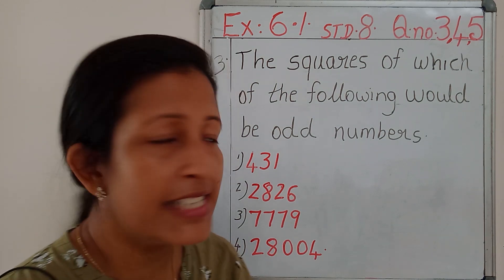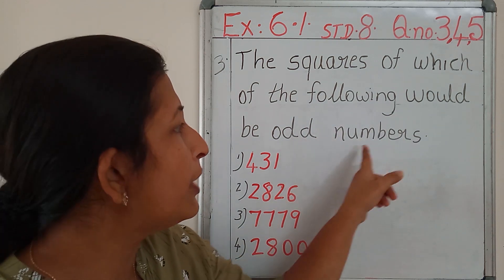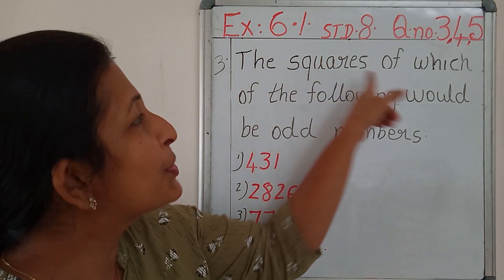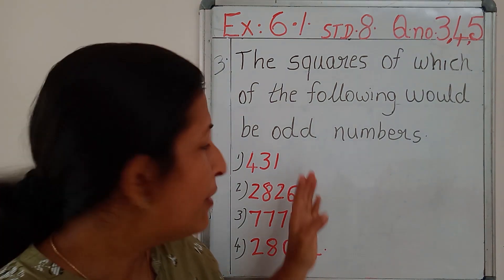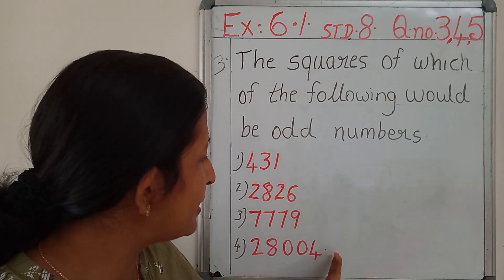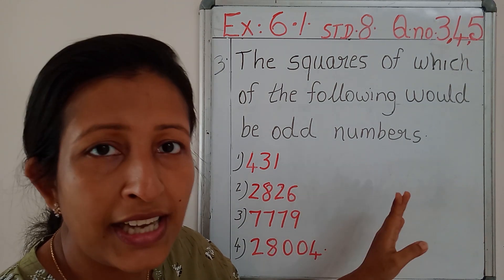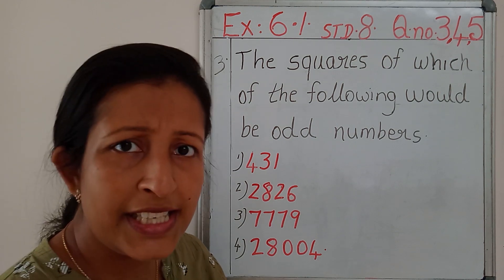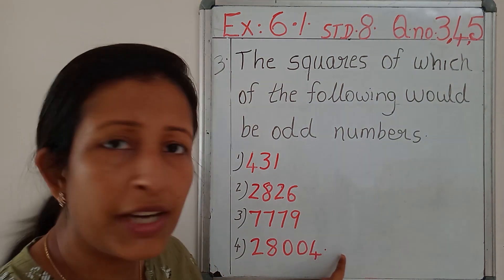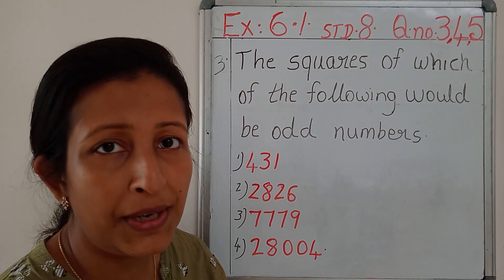Question number 3 asks: the squares of which of the following would be odd numbers? First we have given some numbers. We have to find out the squares, then choose what are the odd numbers. Is it easy for you to find out all the squares of each of these numbers? No. So we have to apply a property.